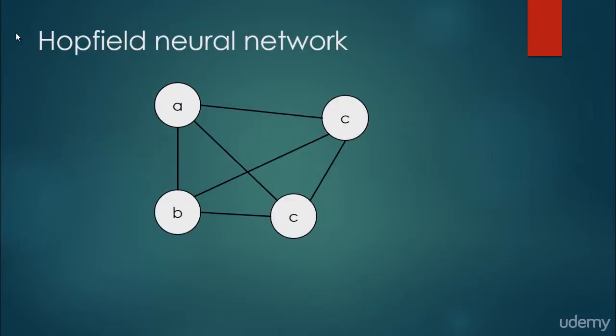So let's take a look at Hopfield neural network. Hopfield neural network, we have these nodes, the A, B, C, and D, it represents neurons, and we have connections between each of these nodes to any other nodes. So that's why all of the nodes are connected.